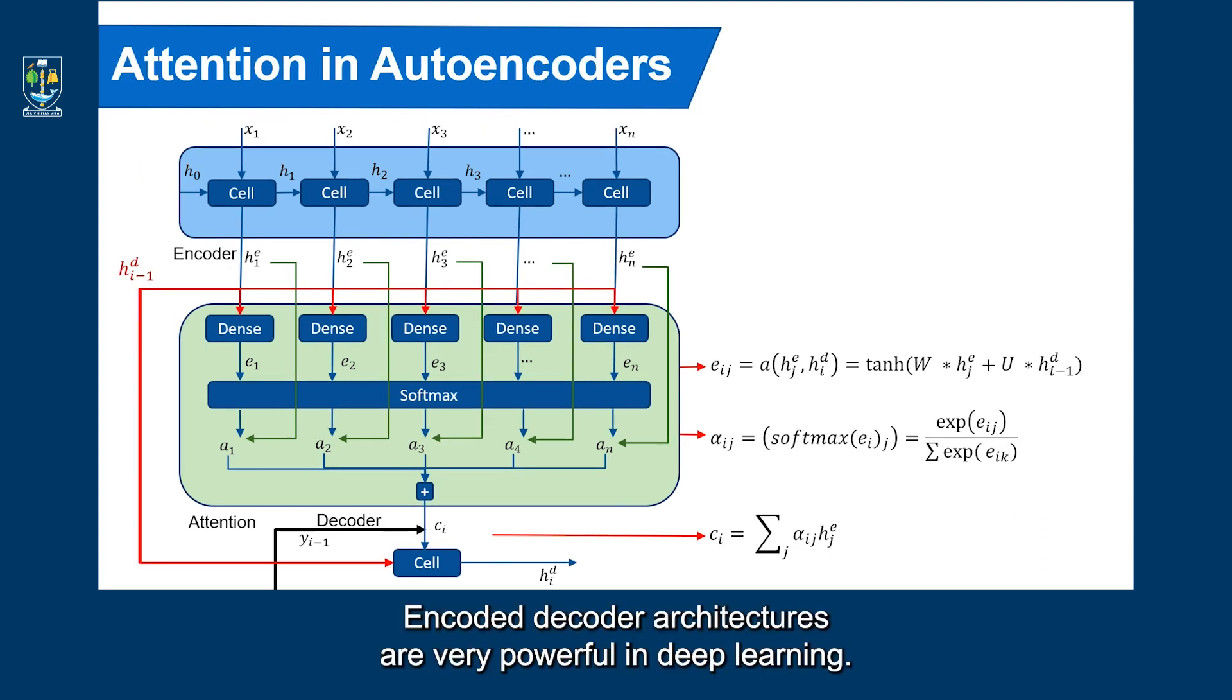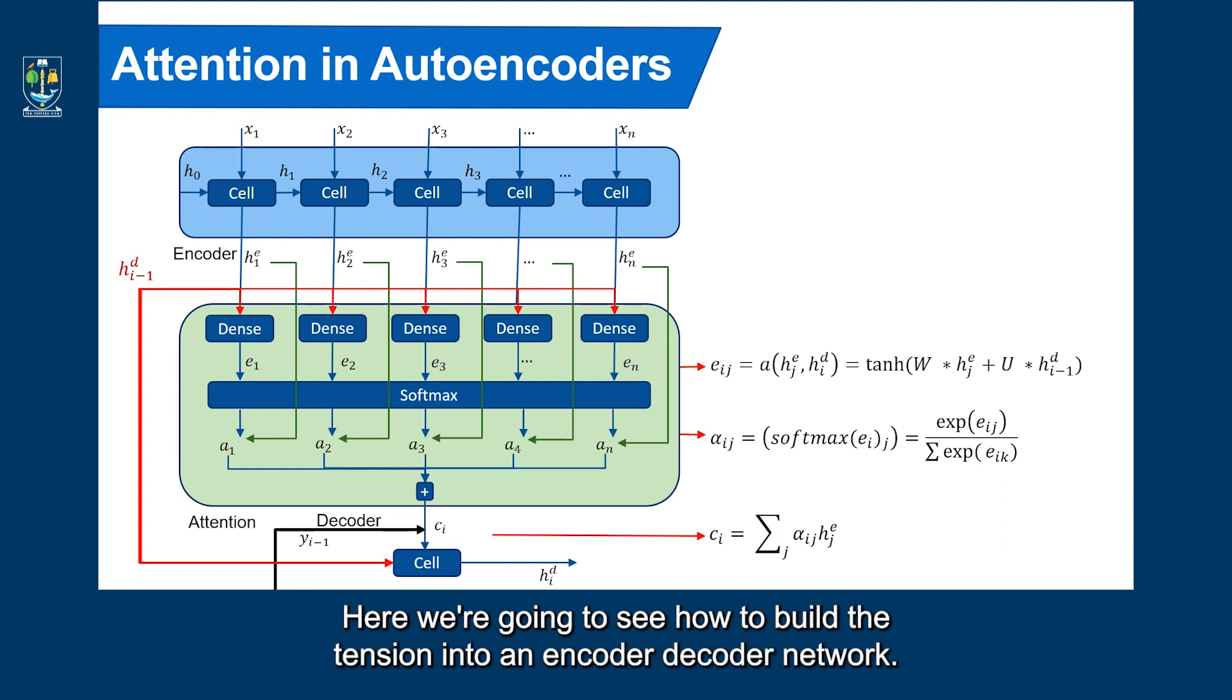Encoder-decoder architectures are very powerful in deep learning, and for this reason, they have been used in several applications, including natural language processing, computer vision, and healthcare informatics. Here we're going to see how to build attention into an encoder-decoder network. In particular, we're going to see a recurrent neural network encoder and decoder.